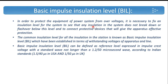Another important term associated with insulation coordination is Basic Impulse Insulation Level (BIL), which is a standard value of insulation level. In order to protect equipment from over-voltages, it is necessary to fix an insulation level for the system so that it should not break under normal working conditions. The common insulation level for all insulation in a substation is called the Basic Impulse Insulation Level, which is established in terms of withstanding voltages of apparatus and lines. BIL is defined as a reference level expressed in impulse crest voltage with a standard wave not longer than a 1.2 by 50 microsecond wave, according to Indian standards.